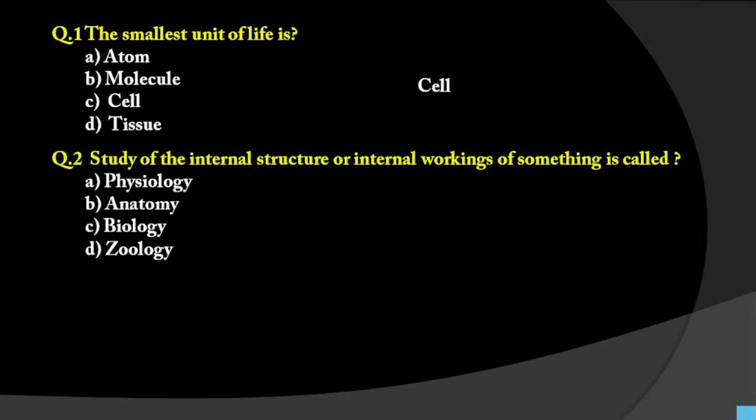Second question: Study of the internal structure or internal working of something is called what? Options include physiology, biology, and zoology. When we talk about internal structures and their relationship with internal organs, the answer is anatomy. Physiology deals with functions, zoology deals with animals in general, but here internal structure is asked, so the answer is anatomy.